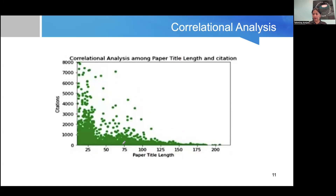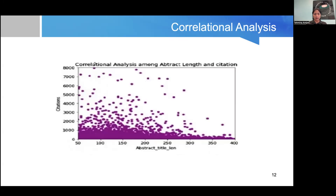Then we have the paper title length — whether it is a lengthy title or a short one — and once again you will see a similar trend: with very long article titles, you are going to make them less attractive. We also performed correlational analysis between received citations and the length of the abstract. Here there is a slightly decreasing trend, but not as steep as in the previous diagrams. Journals normally allow a reasonable word count for abstracts, so most papers fall within that domain, which is why the decline is more subtle.